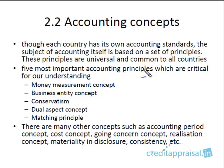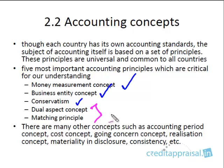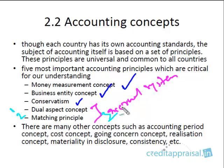These are the 5 concepts: the money measurement concept, the business entity concept, conservatism, and the two most important concepts for our discussion — the dual aspect concept and the matching principle. We will also discuss the accrual system of accounting. These three together form the bedrock of our future discussions. Please note there are other accounting concepts such as the accounting period concept and the cost concept, which we are not going into as they are not relevant for our discussion.